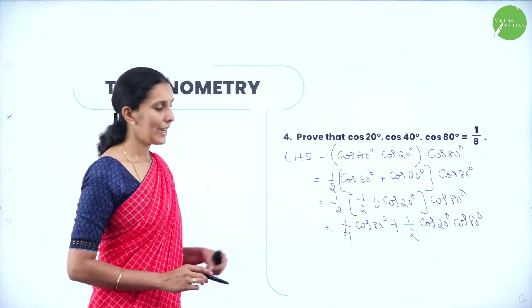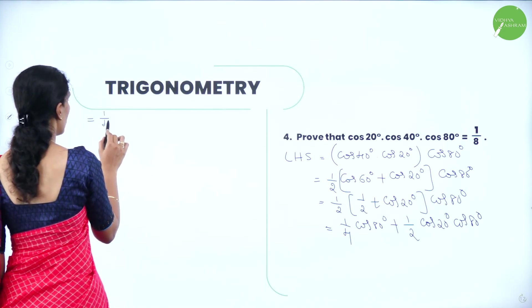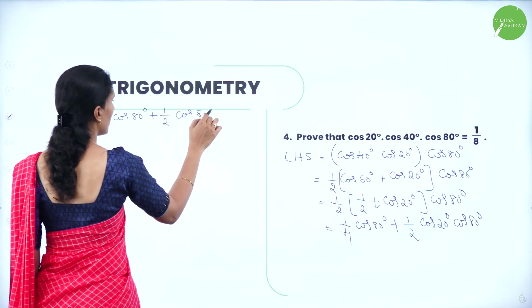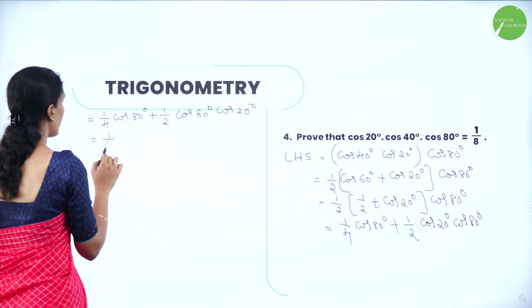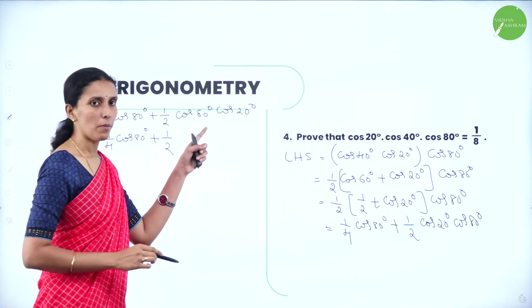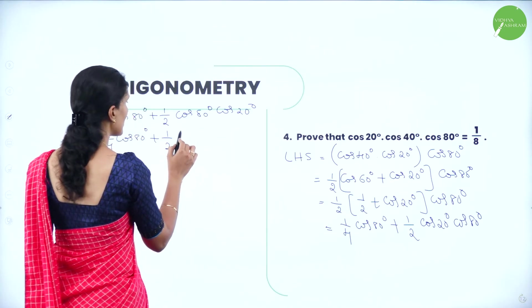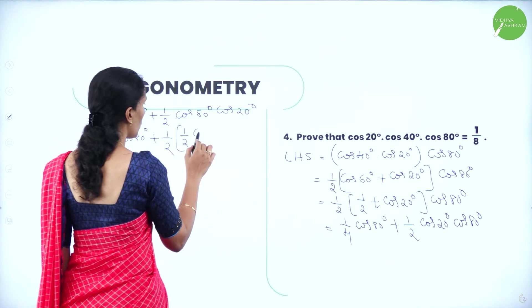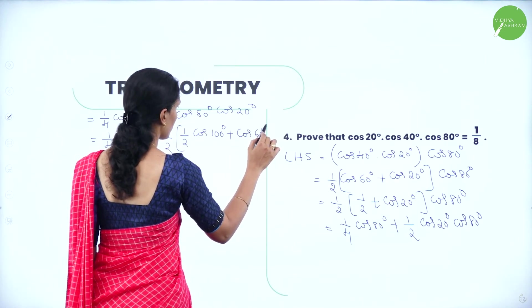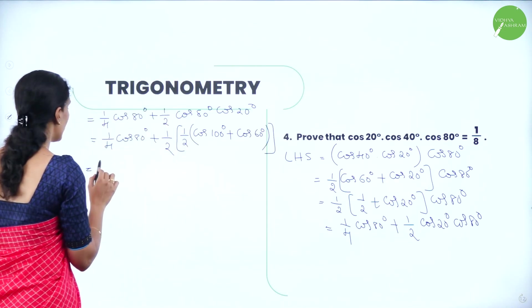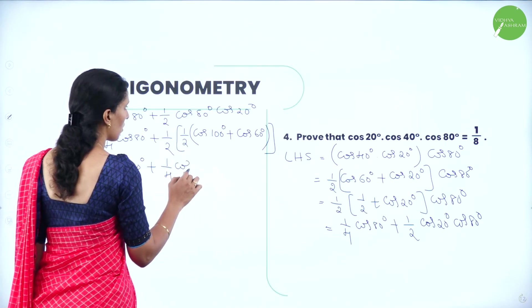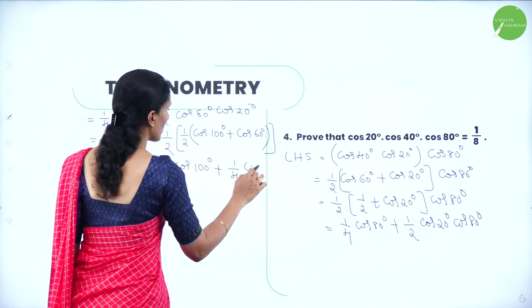Now apply the transformation formula to cos20°·cos80°: ½[cos(100°) + cos(60°)]. So we get (1/4)·cos80° + (1/2)·½[cos100° + cos60°] = (1/4)·cos80° + (1/4)·cos100° + (1/4)·cos60°.